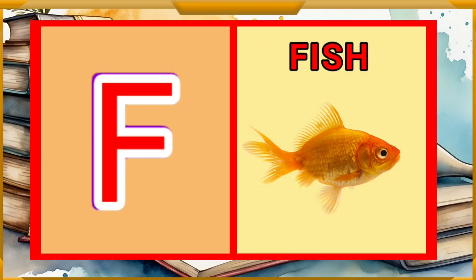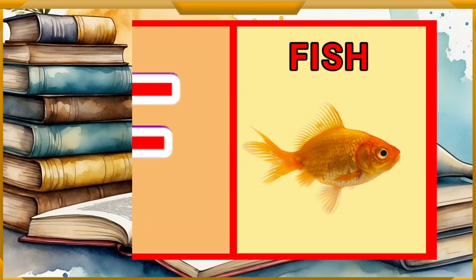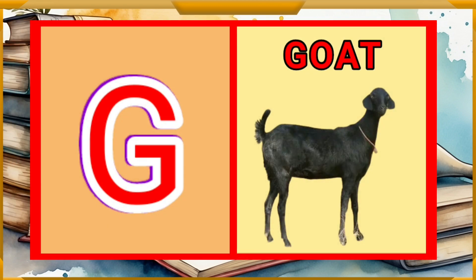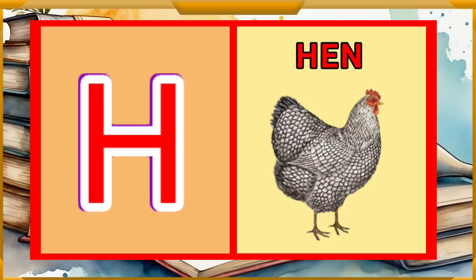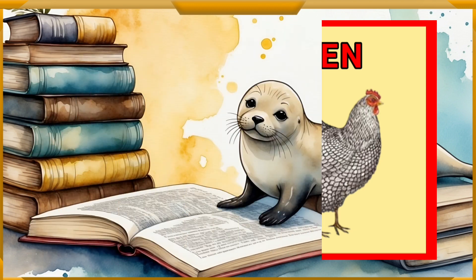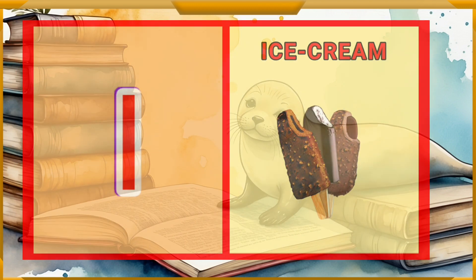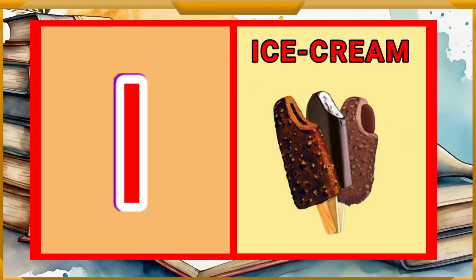D for fish, G for goat, H for hen, I for ice cream.